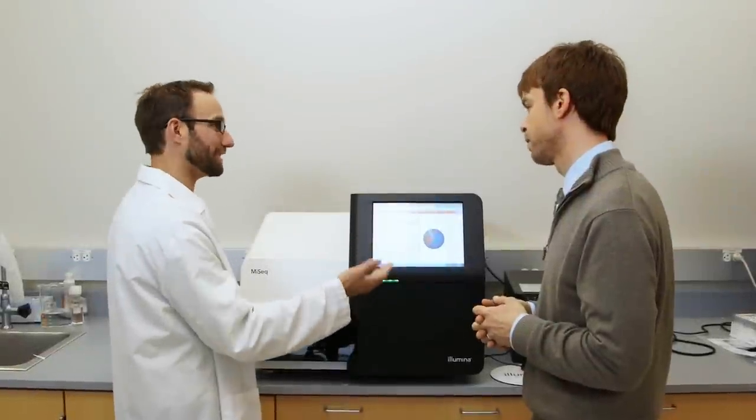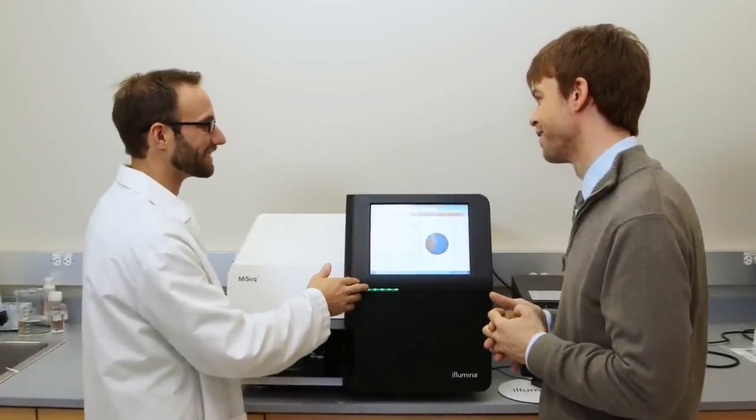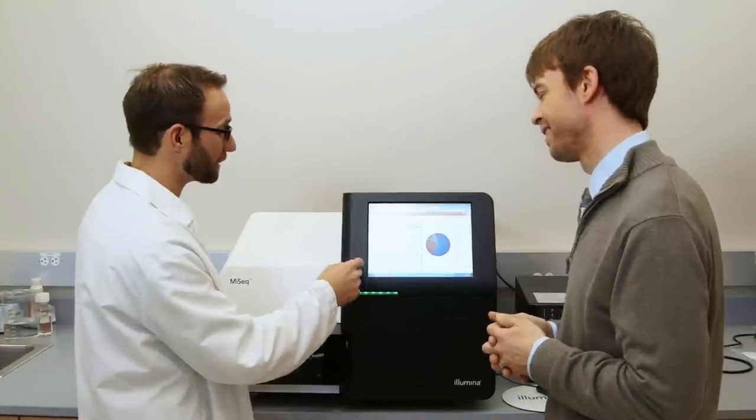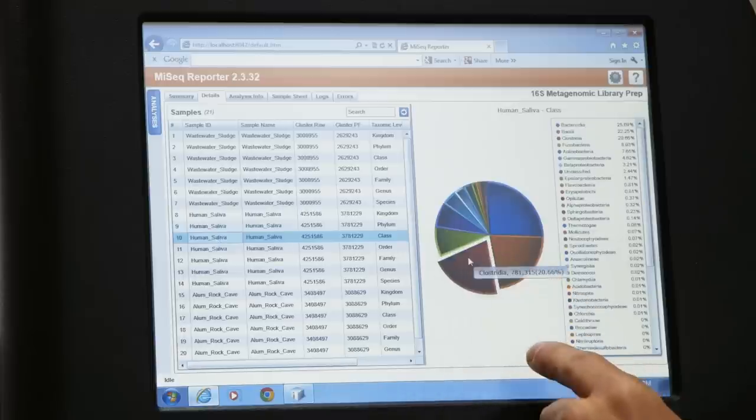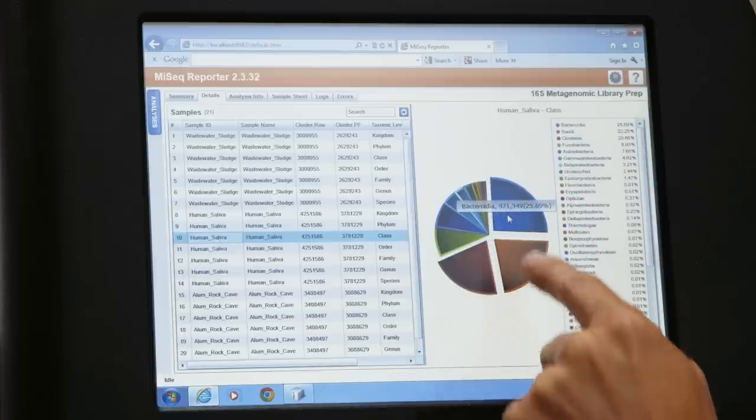Now, the researchers of the American Gut Project are using Illumina's MySeq system to sequence the 16S ribosomal RNA gene. This is a powerful method for characterizing many different bacteria in every sample they receive.